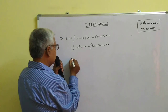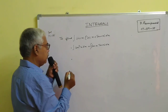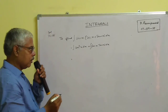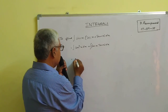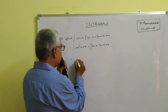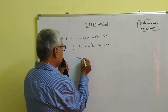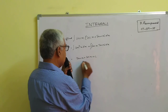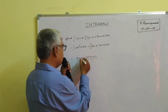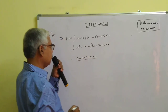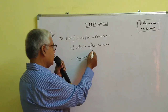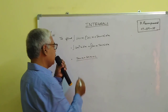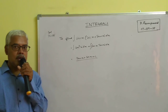This is equal to tan x plus secant x plus c. The integral of secant squared x is tan x, and the integral of secant x tan x is secant x, where c is the constant. This is the answer.